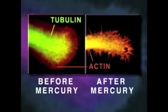Shown here is a neurite growth cone stained specifically for tubulin and actin, before and after mercury exposure. Note that the mercury has caused disintegration of tubulin microtubule structure.